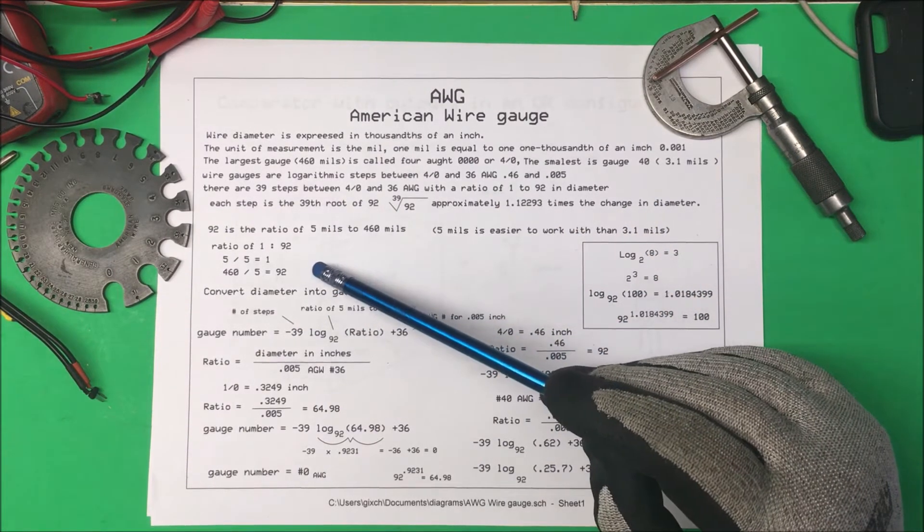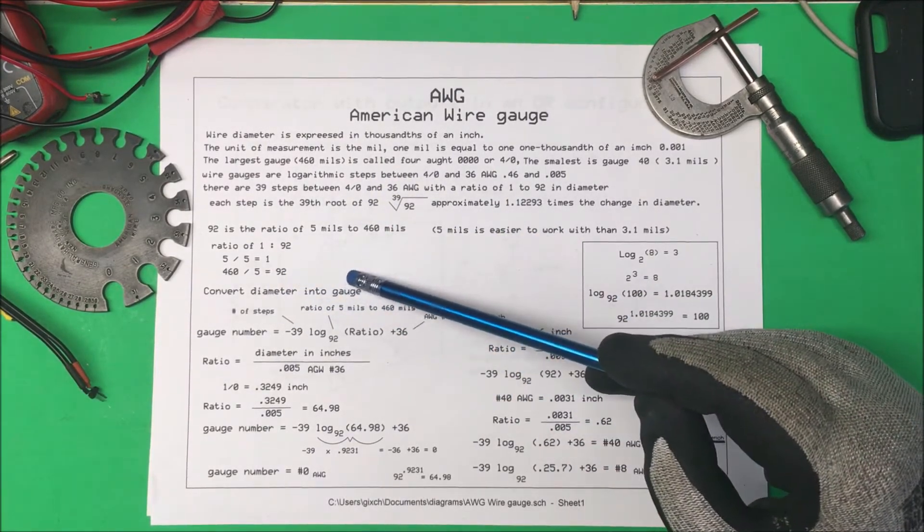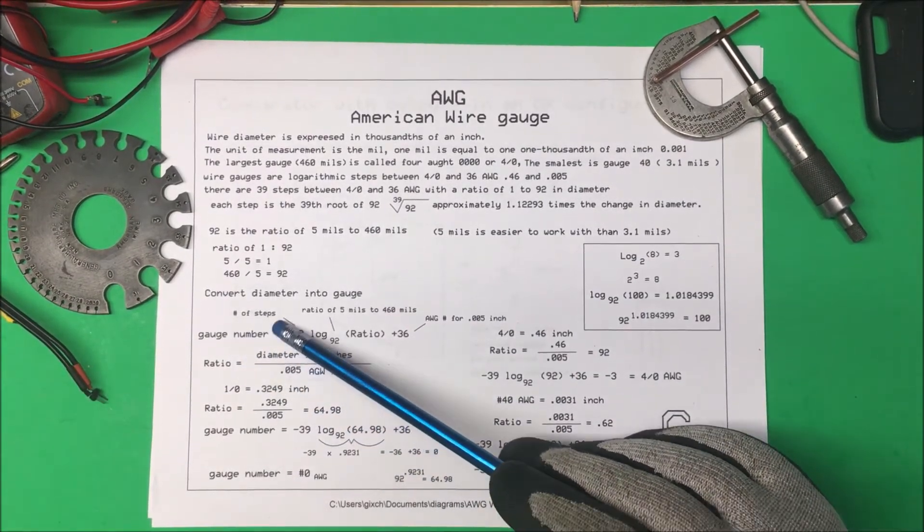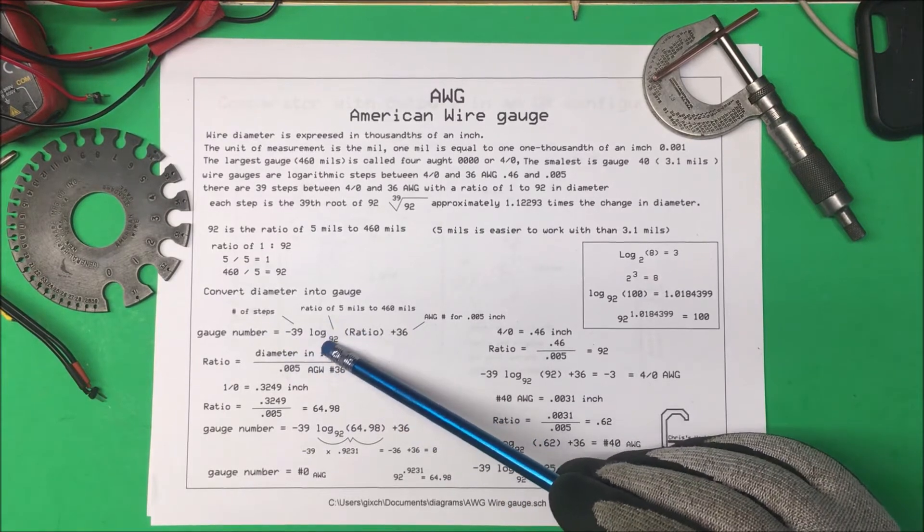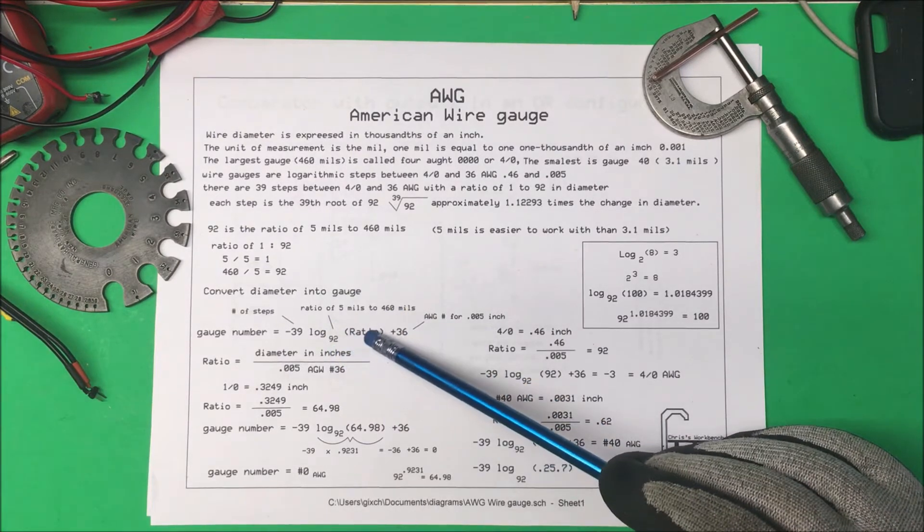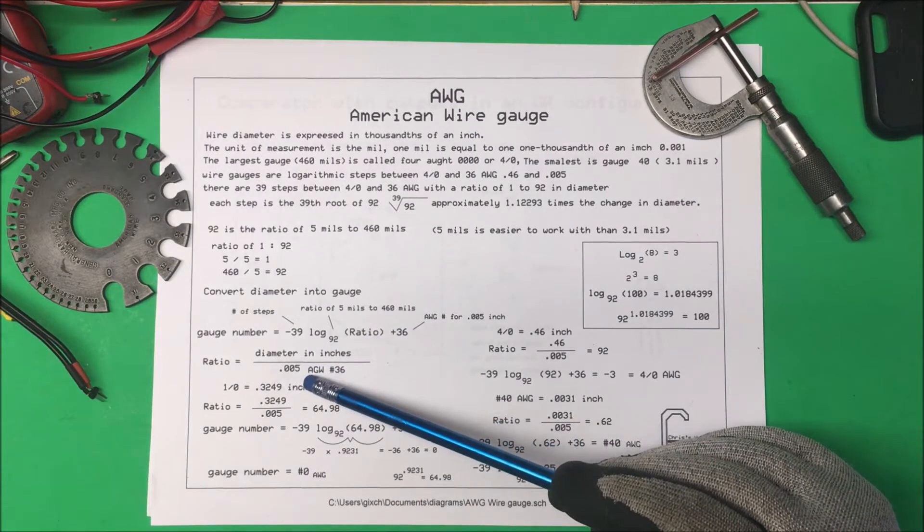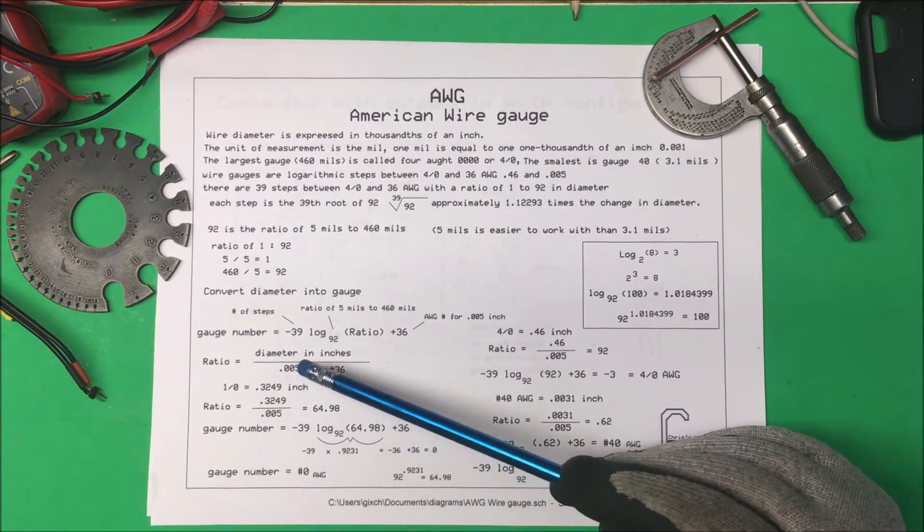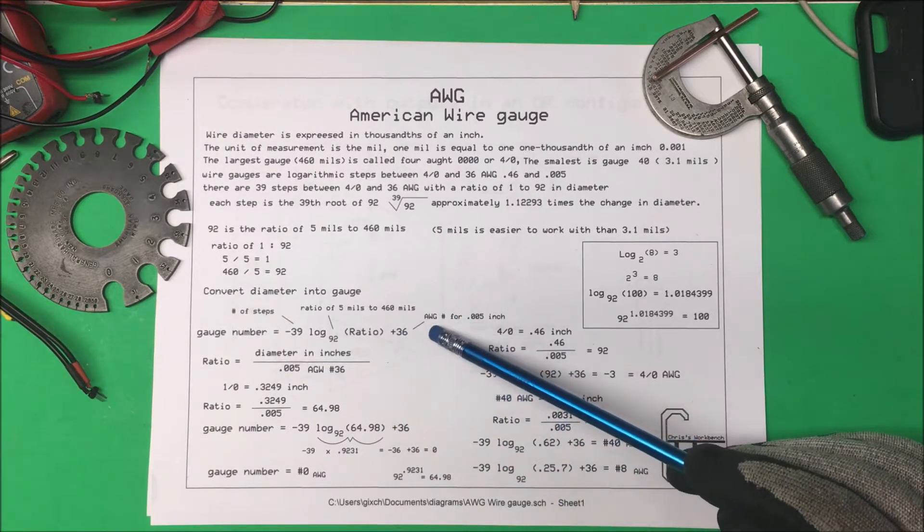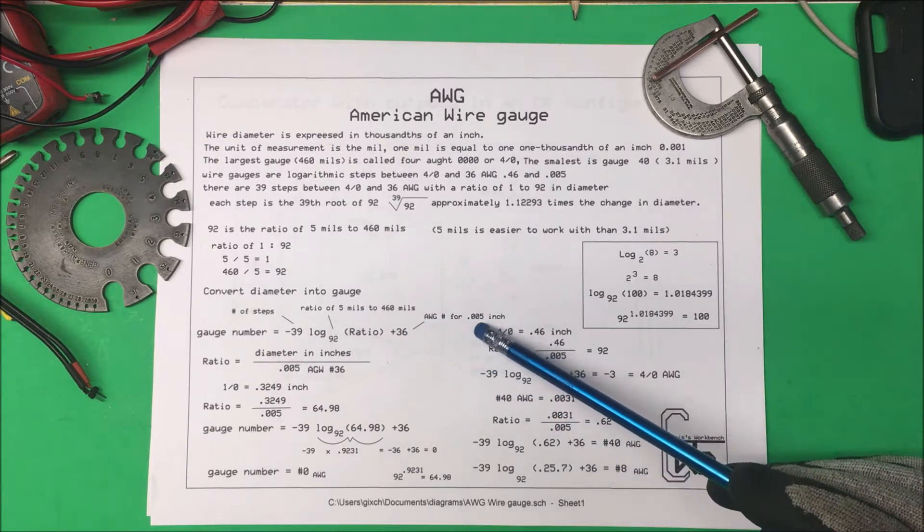If we measure our diameter and want to convert it into gauge we can use this formula. The gauge number equals minus 39 log base 92 of the ratio, where the ratio is our measured diameter divided by .005, and then we add in the 36 back in which is the gauge number for the .005.